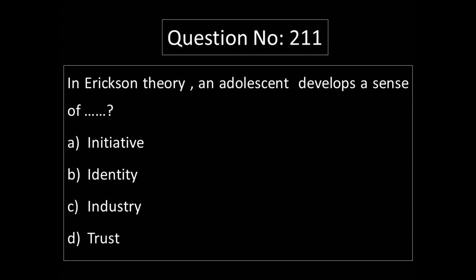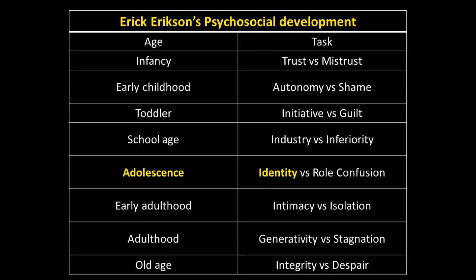Erikson's Psycho-Social Development Theory lists developmental tasks by age. In the Infancy period: Trust. In Early Childhood: Autonomy versus Shame or Doubt (Toddler). Preschool age (3 years): Initiative versus Guilt. School age: Industry versus Inferiority. Adolescence: Identity versus Role Confusion.